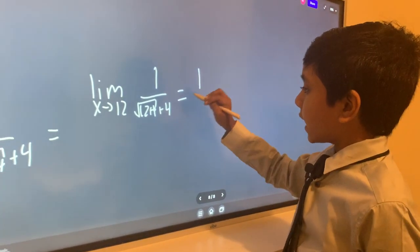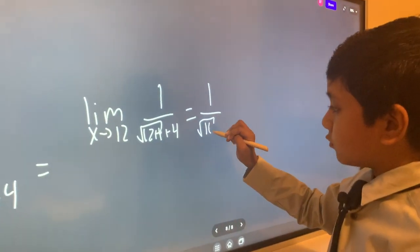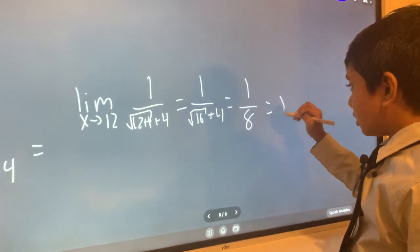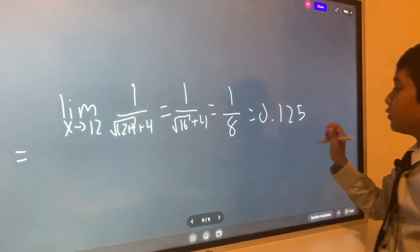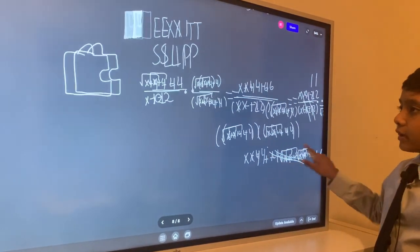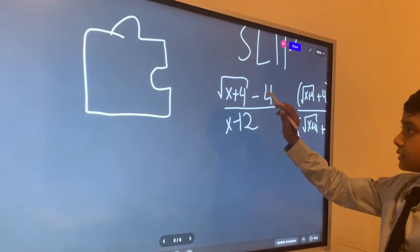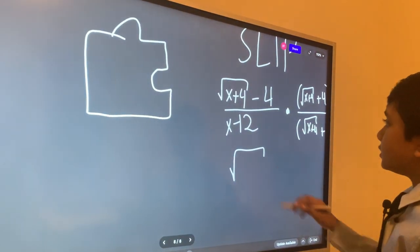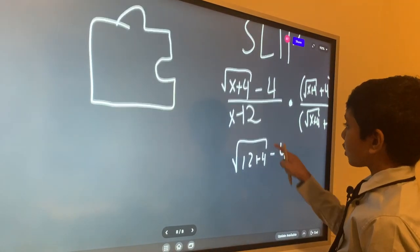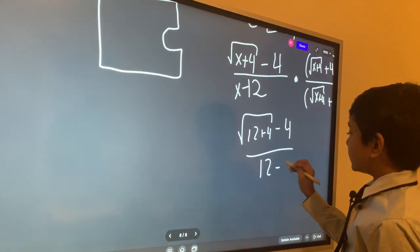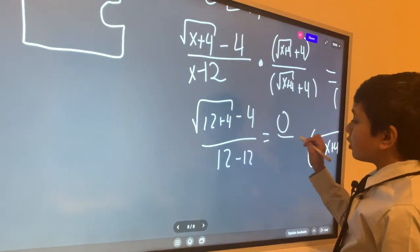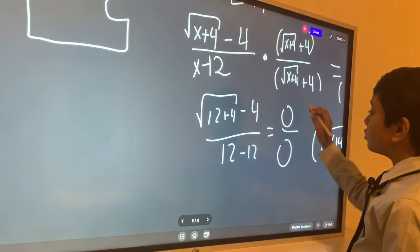Now when we plug it in, we get 1 over root 16 plus 4, giving us 1 over 4 plus 4 is 1 over 8. Alternatively, the decimal form, which I won't check. And to think that when you initially plugged it in, you get something undefined, because you'd have root x plus 4 is 12 plus 4 minus 4 over 12 minus 12, which would just give you root 16 minus 4 is 0 over 12 minus 12 is 0, which is bad.